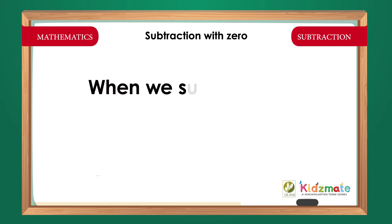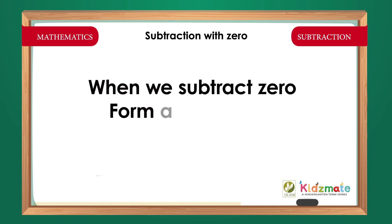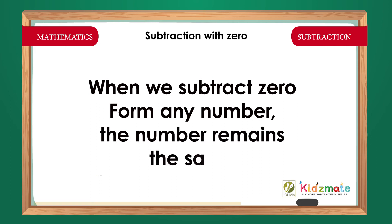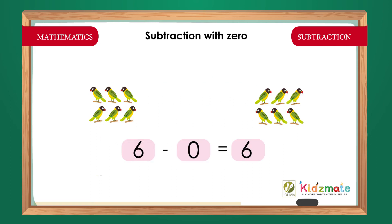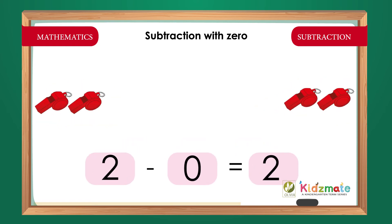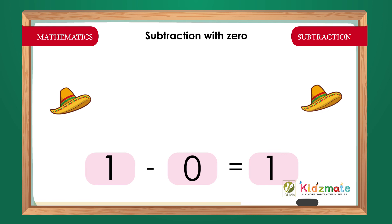When we subtract 0 from any number, the number remains the same. 6 minus 0 is equal to 6. 2 minus 0 is equal to 2. 1 minus 0 is equal to 1.